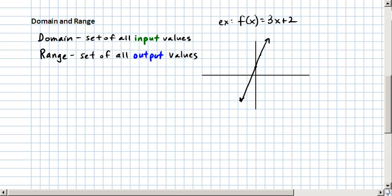So for example, if we looked at the function that we saw in the previous video, f of x equals 3x plus 2, the domain of that function would be all real numbers. So why is that? Why exactly is that the case?